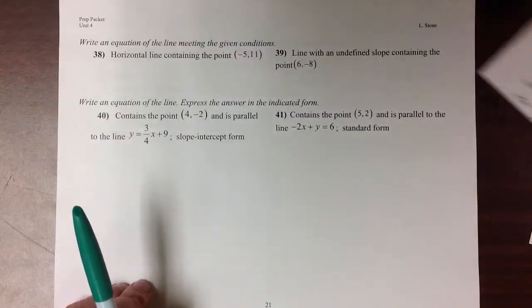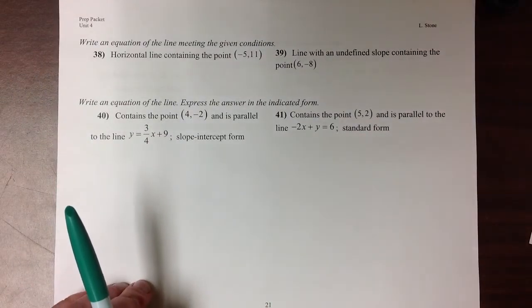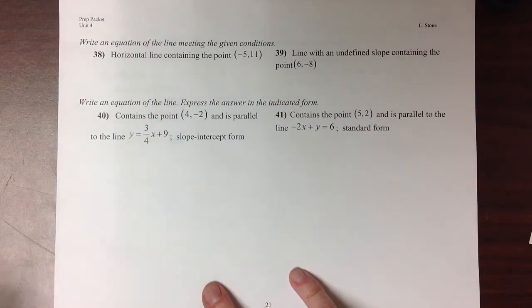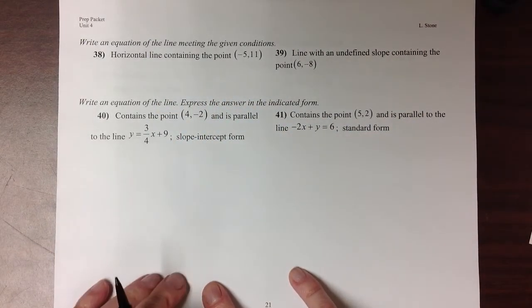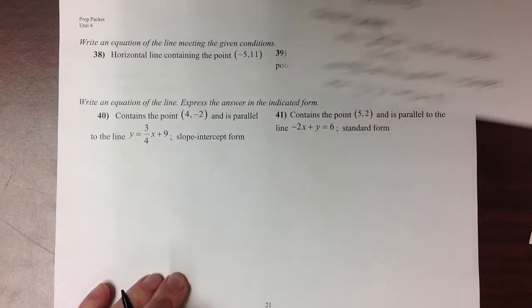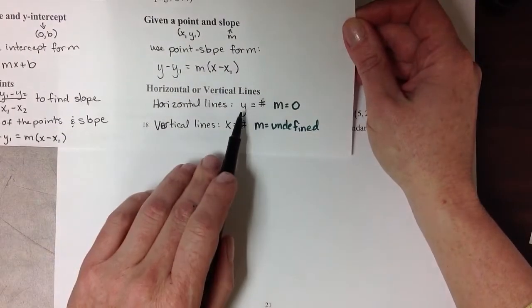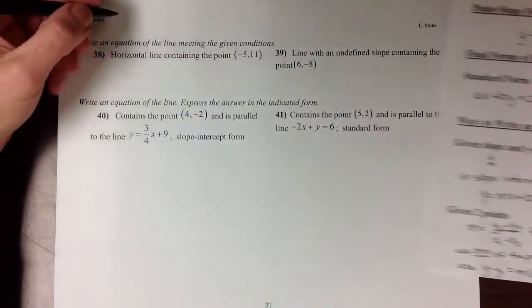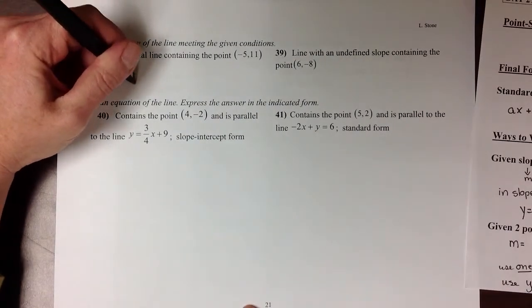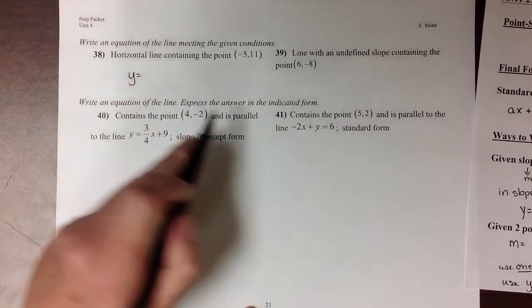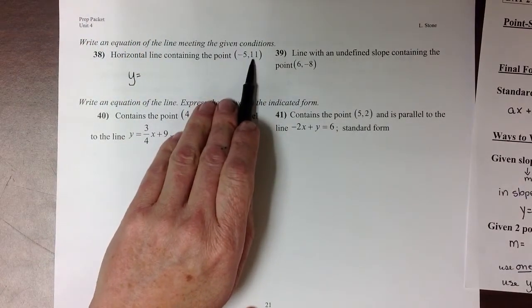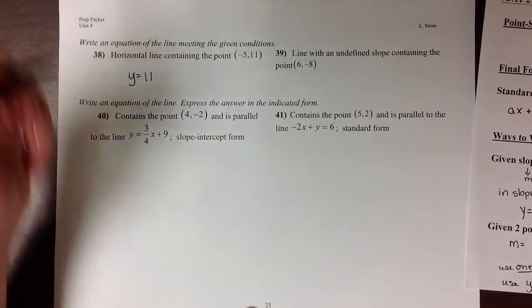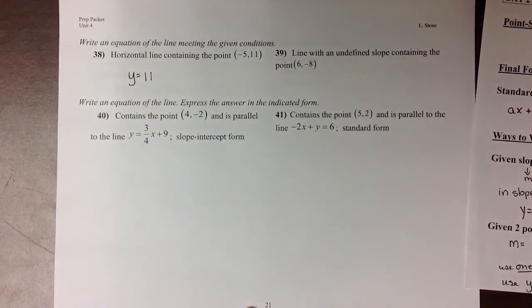So when we look at these first two examples, they say write the equation of a horizontal line that contains the point (-5, 11). Well, all horizontal lines come in the form y equals some number. So we're going to start our horizontal line with y equals and then refer to this point to see what it is that y needs to equal. Since 11 is in that spot, our equation of this line is y equals 11.